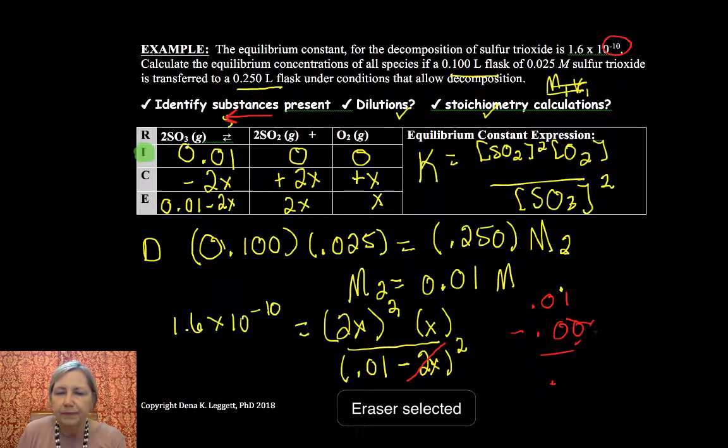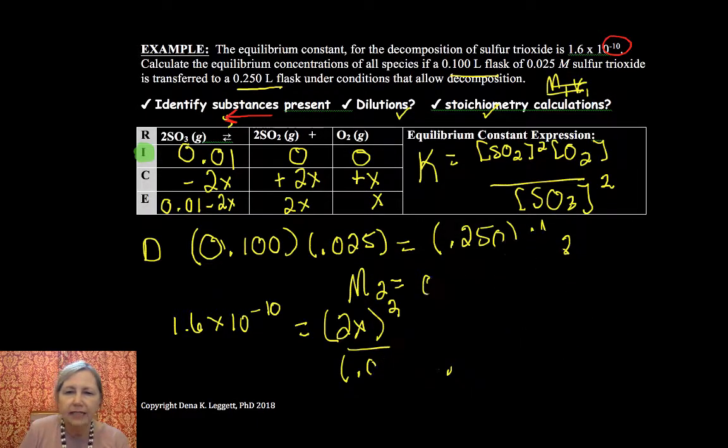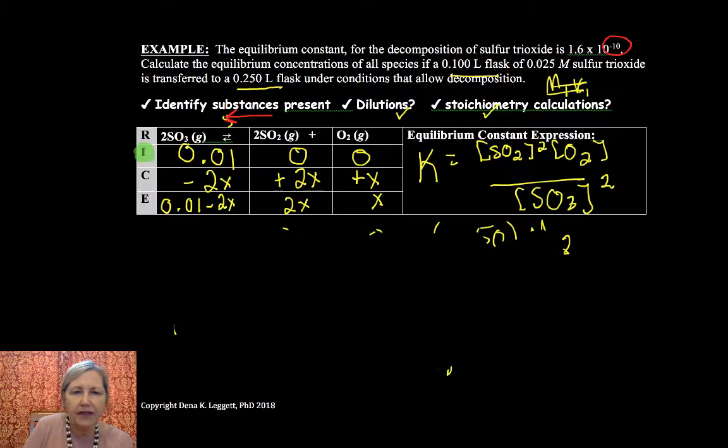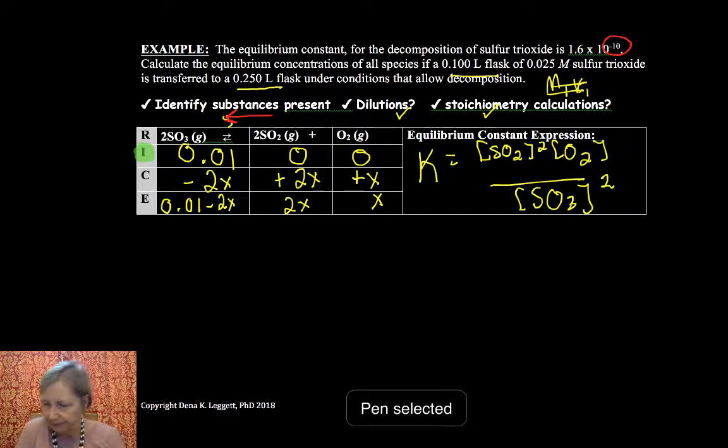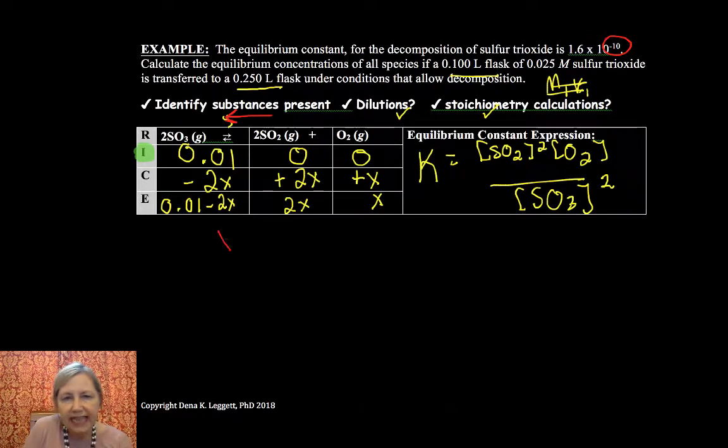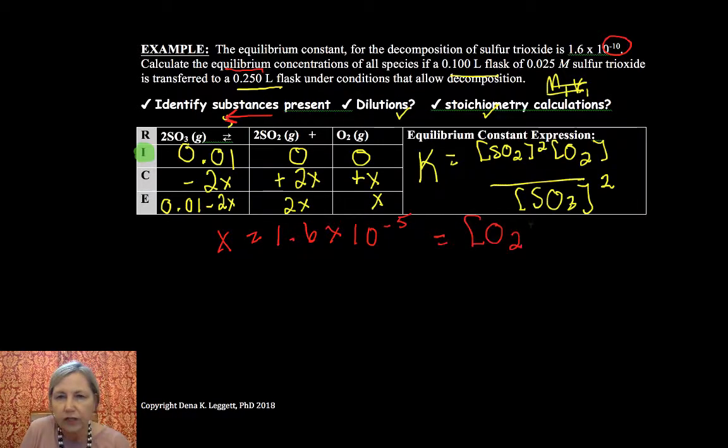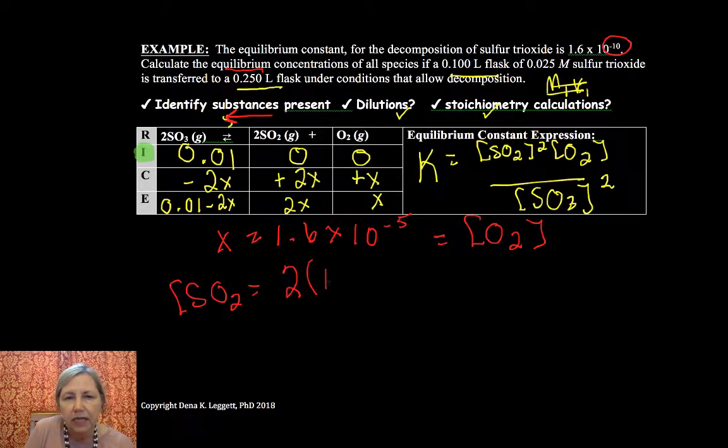It would be like saying okay, I'm going to take 0.01, I'm making up numbers here, minus 0.0000001, which rounded to sig figs is still 0.01. So that's what we're saying, is the addition and subtraction is so small we're going to get to ignore it. All right, so let's take a look then and finish our math. So once you do that algebra, you would find that X is equal to 1.6 times 10 to the minus 5th.